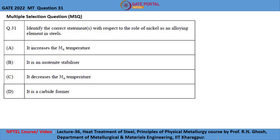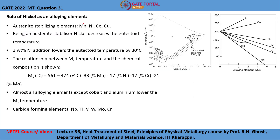Let us now look at the correct answers for this question. The following are the most common austenite stabilizing elements used in steels: manganese, nickel, cobalt, copper, and carbon itself is also an austenite stabilizing element.